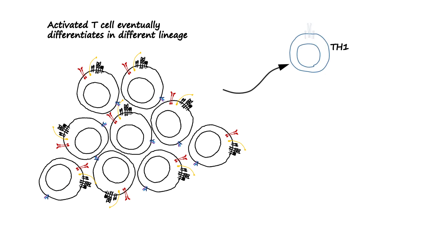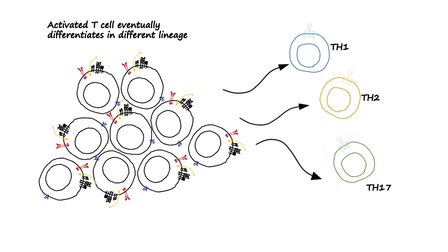Based on the type of pathogen and the cytokine signaling available, the activated T cell can become a TH1, TH2, TH17, or T regulatory subtype — each with its own function, which we'll cover in separate videos. All of these subtypes have one thing in common: they carry the CD4 receptor.